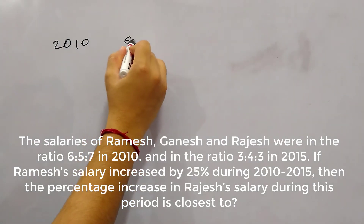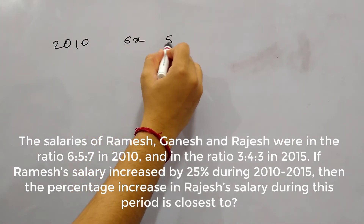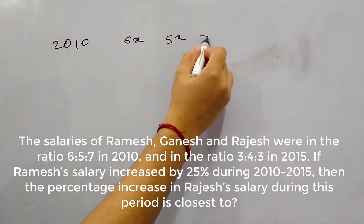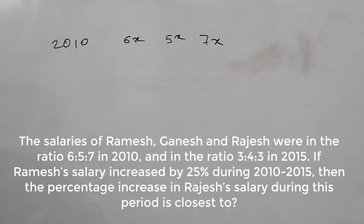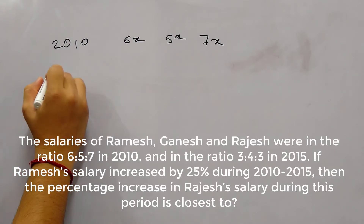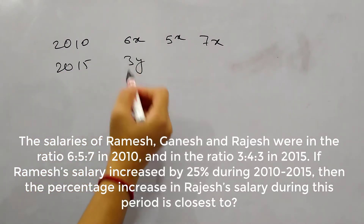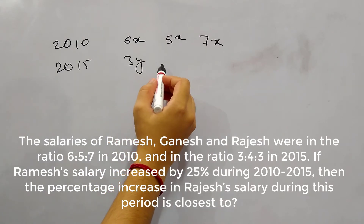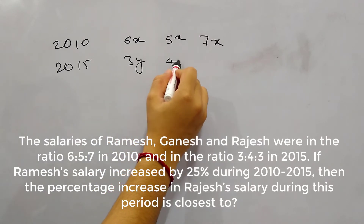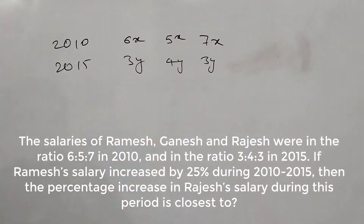So let's say these are 6x, 5x and 7x. And in 2015 it became 3:4:3, so let's say this is 3y, 4y and again 3y. So this is the shift in salary.